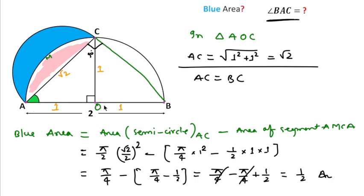AO is the radius and OB is also radius, and OC is a radius, and C is the middle point, then AC and BC are definitely equal and both triangles are congruent also. Now this angle is 90 degrees, so this angle will be 45 degrees and 45 degrees.